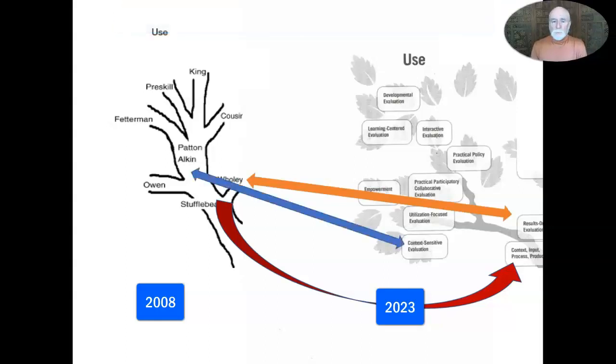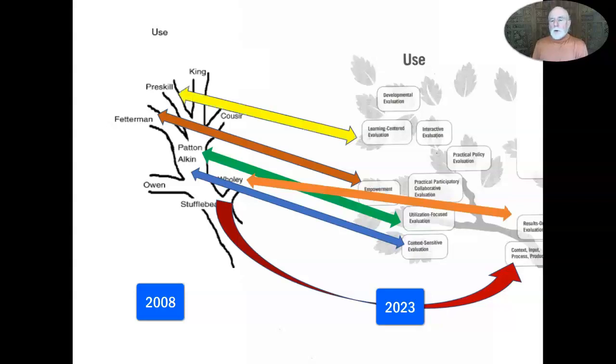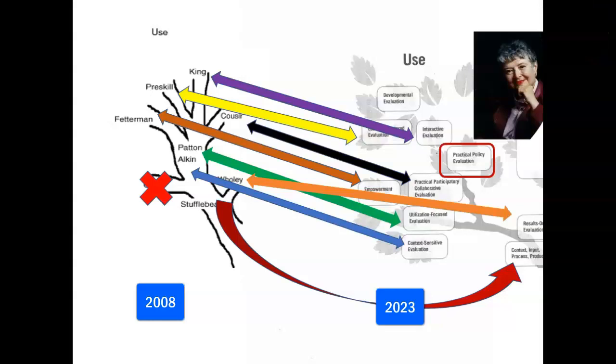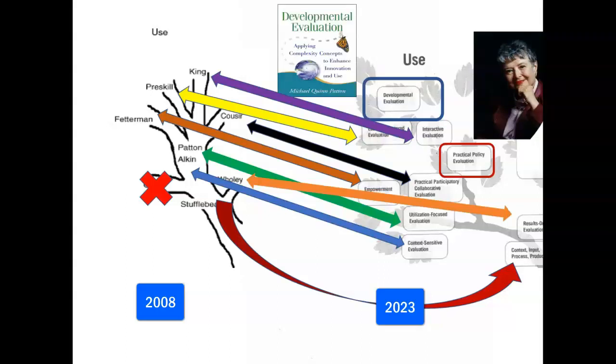In the new version, Stufflebeam becomes the root of the use branch with CIPP (Context, Input, Process, Product). Joe Wholey becomes results-oriented management. Marv Alkin has a new chapter on context-sensitive evaluation focused on use. My book on utilization-focused evaluation moves from naming me as a theorist to the approach itself. Jean King moves to interactive evaluation. And developmental evaluation is added as an outgrowth of the use theory tree.